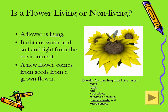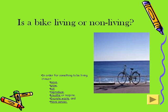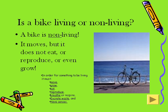Is a flower living or non-living? A flower is living. It obtains water, soil, and light from the environment. A new flower comes from seeds from a grown flower. Is a bike living or non-living? A bike is non-living. It moves, but it does not eat, reproduce, or even grow. It is non-living.